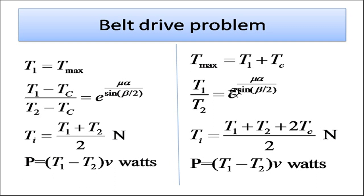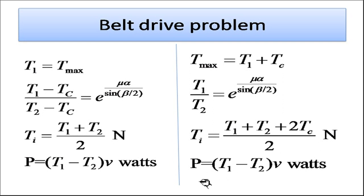In the second approach, used in some books, T_max = T1 + Tc, and the tension ratio T1/T2 = e^(μα) does not subtract Tc. The initial tension is then (T1 + T2 + 2Tc) / 2, and the power equation remains P = (T1 − T2) × v. In this case, tight side tension is T1 + Tc and slack side is T2 + Tc. These are the two major differences in how numericals are solved across different textbooks.